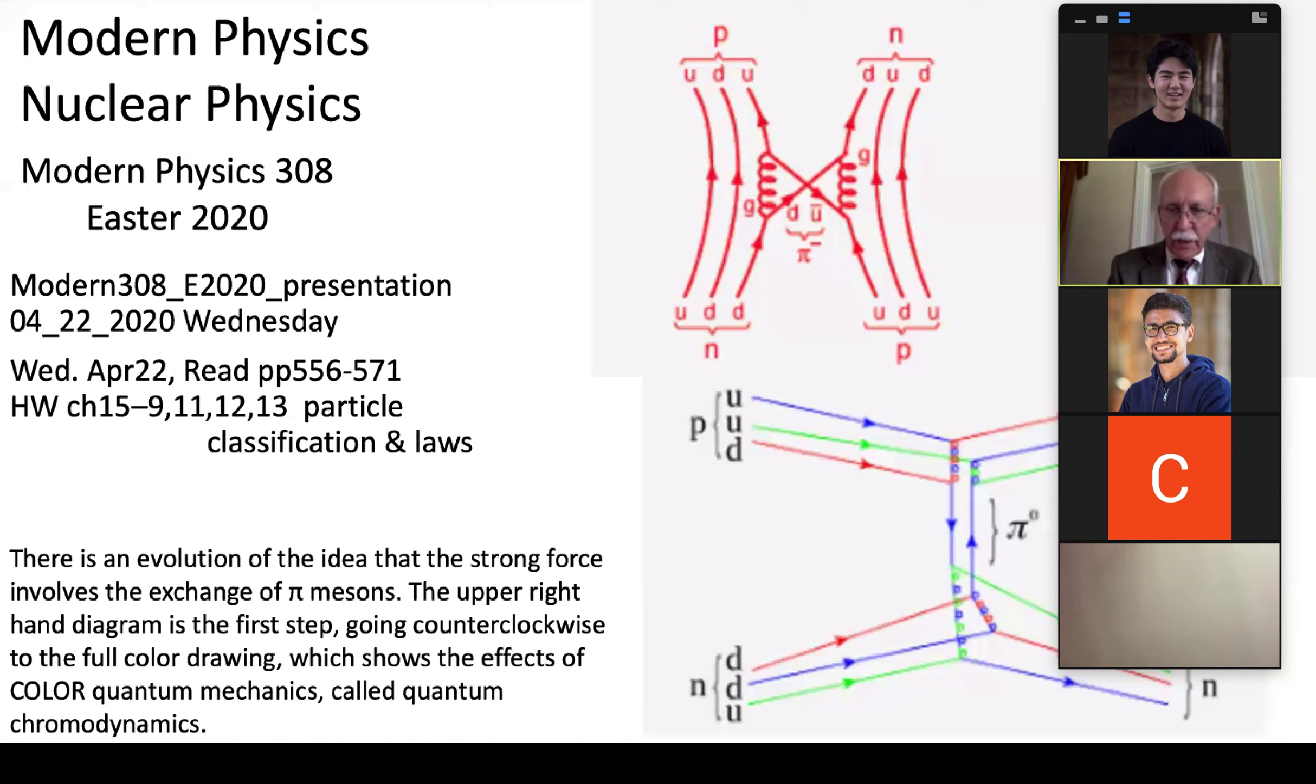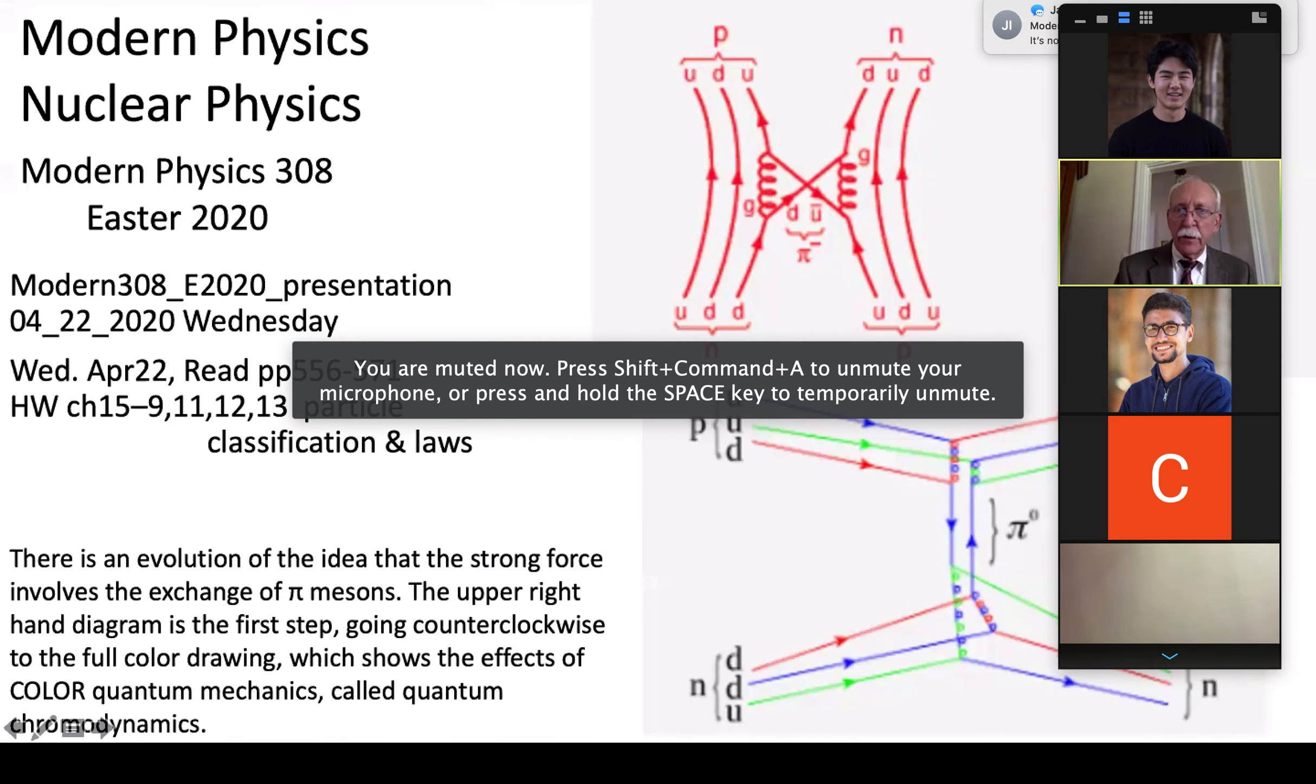I think we were on this page last time. We were talking about the evolution of the ideas here of the pions. This is called a Feynman diagram of an interaction between a proton and a neutron by the exchange of a pi meson and how that evolved into a quark model.